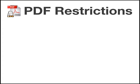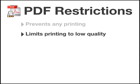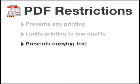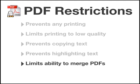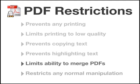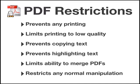For example, you may come across a PDF that is restricted in the following ways: it completely prevents you from printing the PDF, or prevents you from printing a high-quality version, or prevents you from being able to select and copy text, or select and highlight passages. It may also limit your ability to merge the PDF with other PDFs, or restrict other useful things you could normally do.